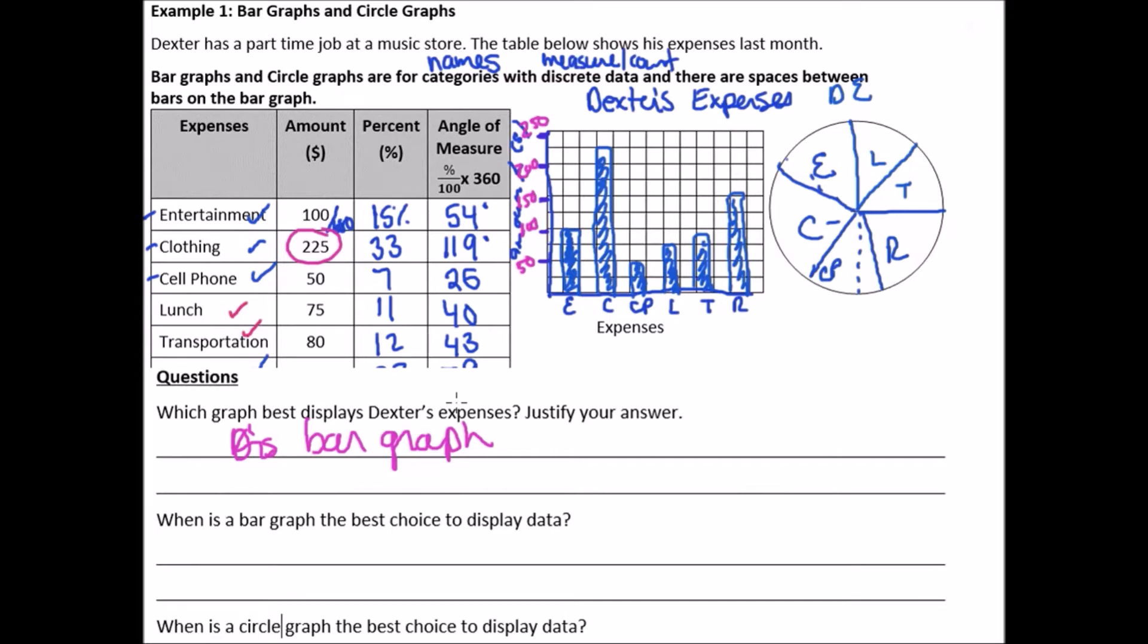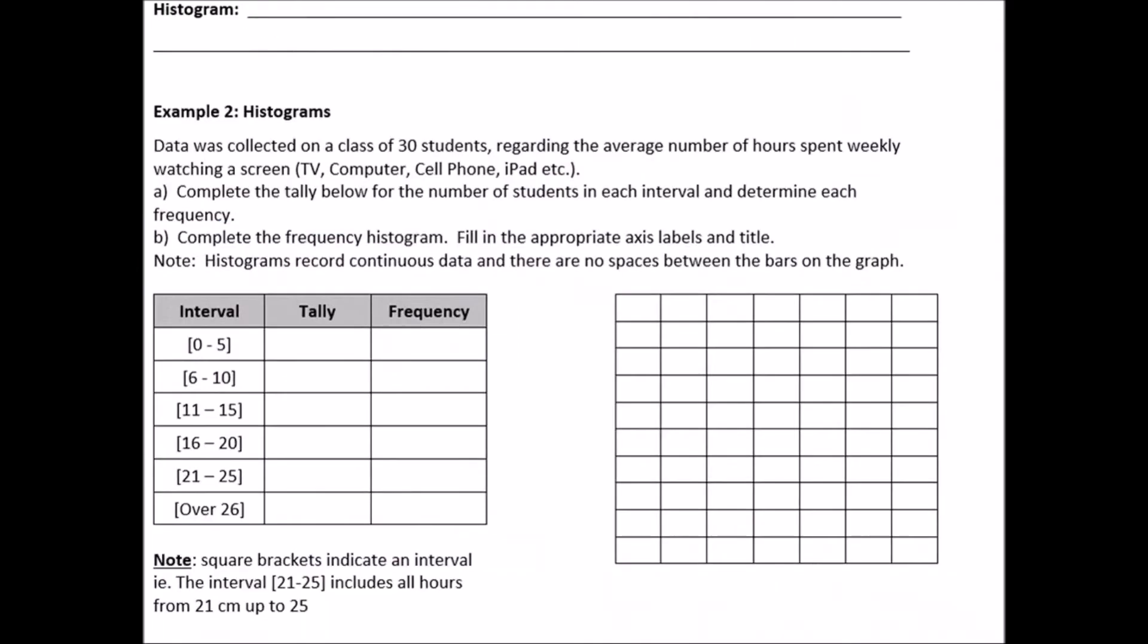Well, specifically the actual expenses are displayed in the bar graph because you can look up the side and see what number correlates to each of the expenses. Whereas the circle graph only gives you the percentage or so like the proportion of his total expenses. So definitely for number one here, it's Dexter's, sorry, it's the bar graph. Okay. When is a bar graph the best choice to display data? This is when we want to, when we want to actually see the specific numbers or values.